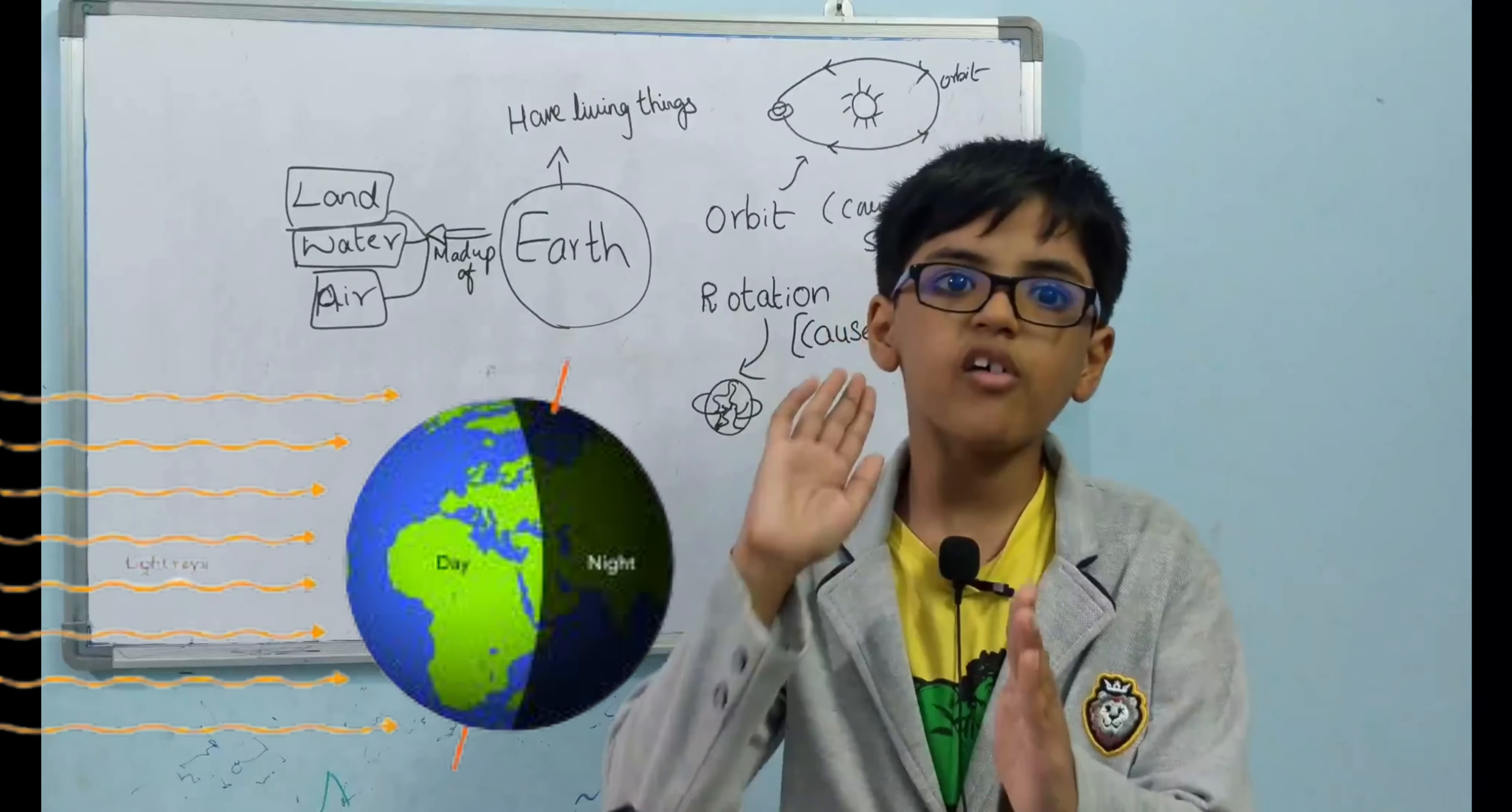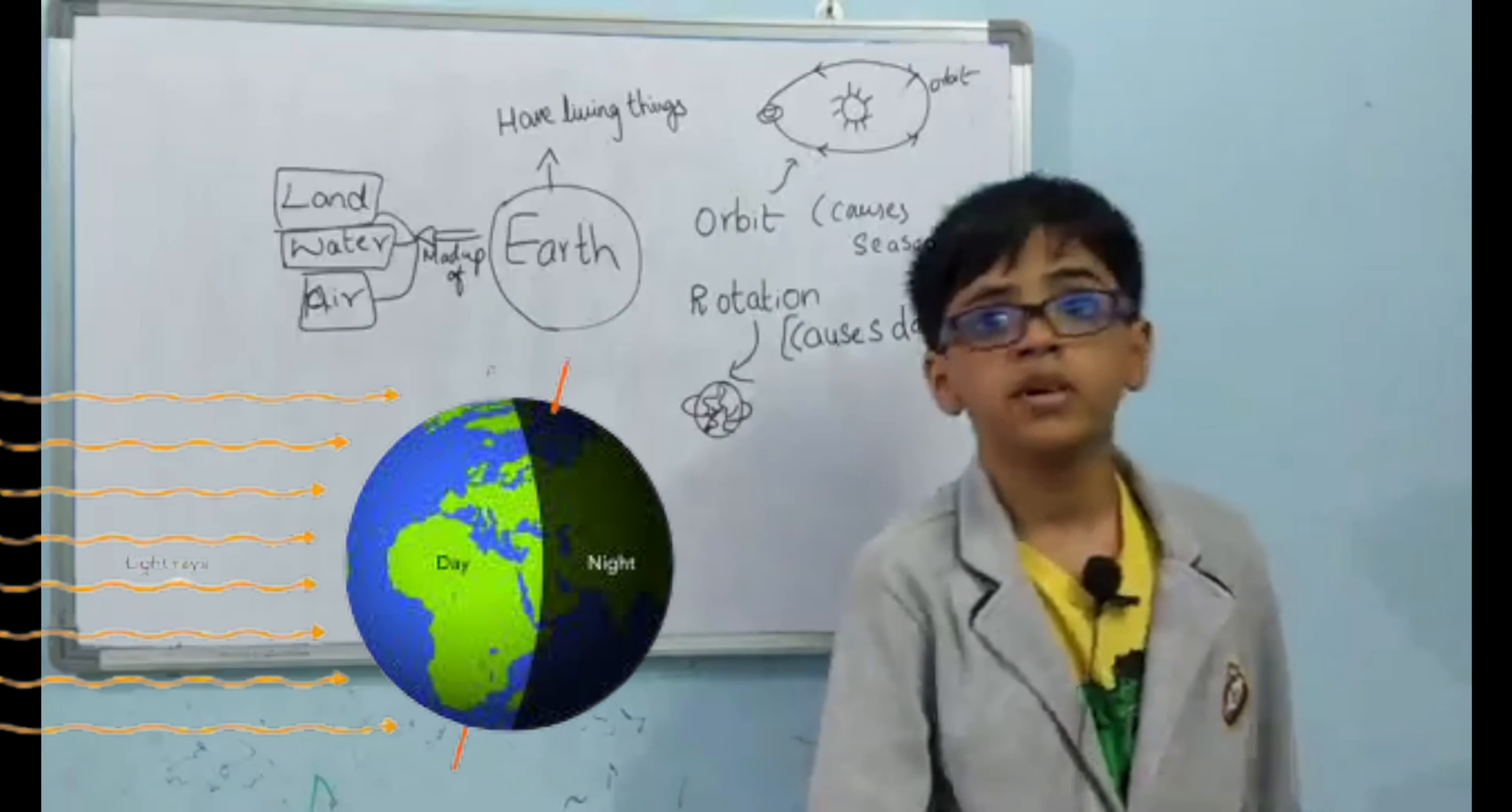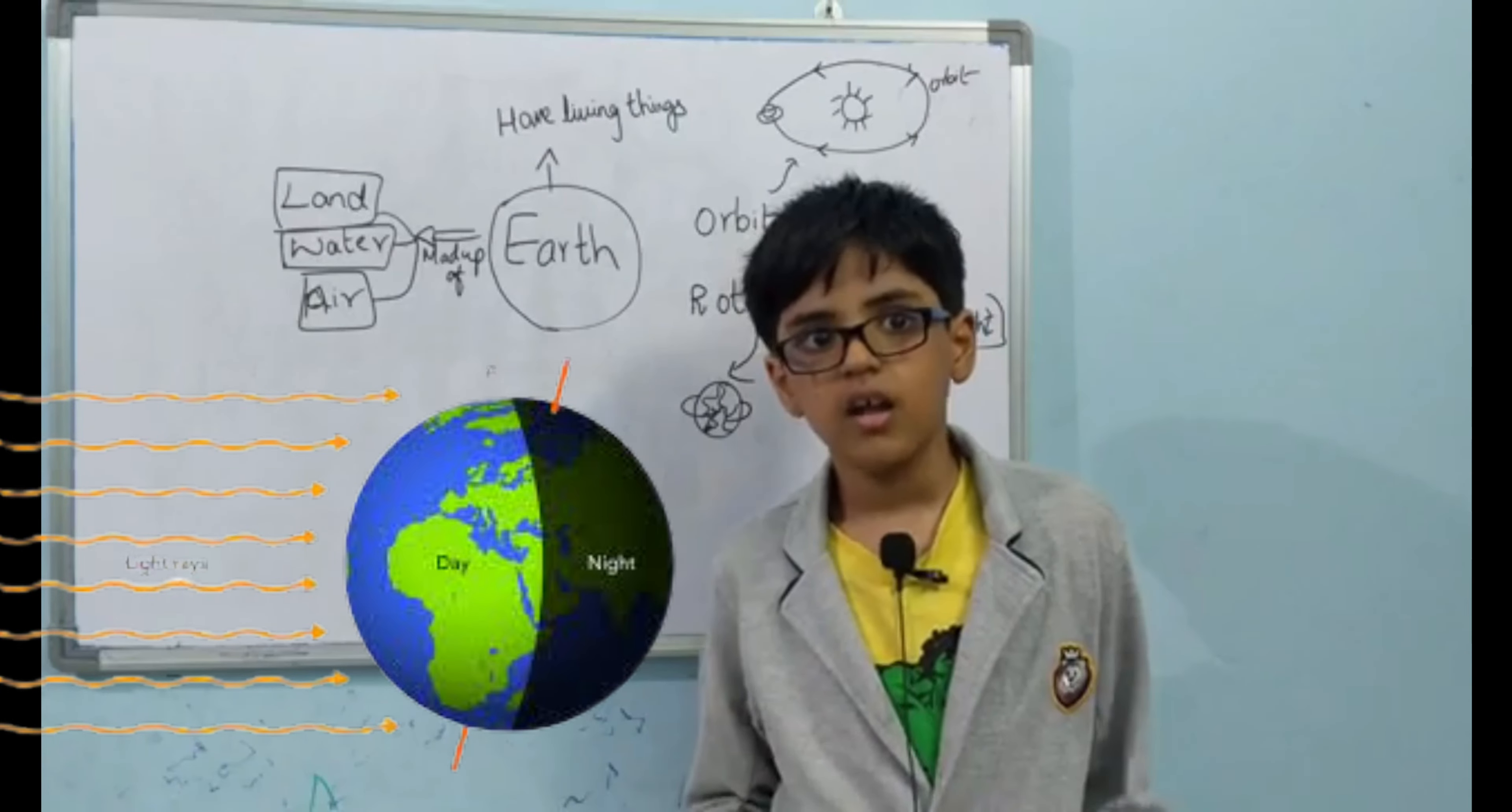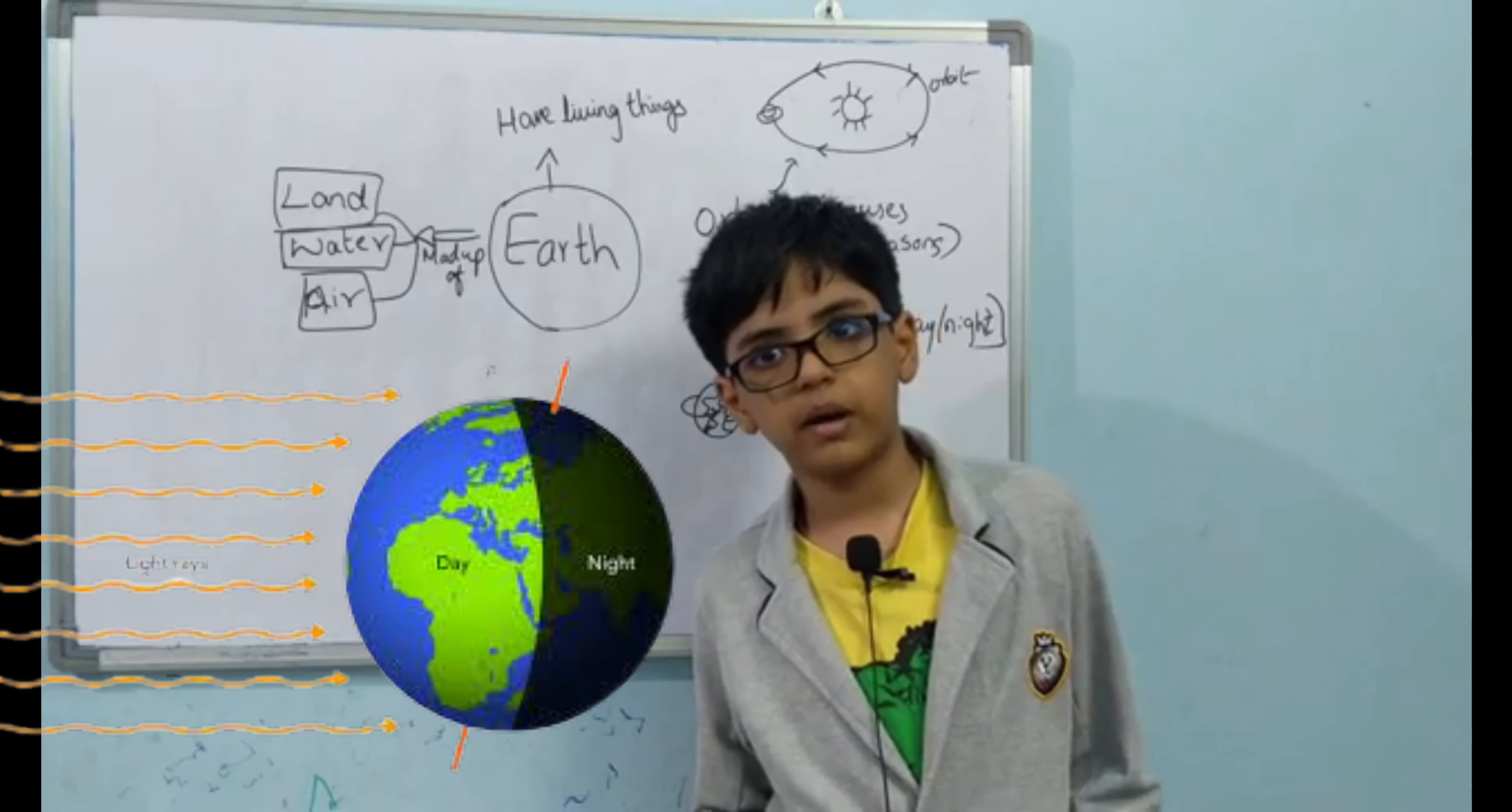Earth has half day and half night. Earth spins like a top all the time. The Earth rotates all the time and causes day and night. That is why day is followed by night and night is followed by day.